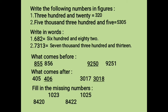Fill in the missing numbers. What comes before 1023? 1022. And what comes after 1023? 1024. And 1025 is already given to us. What comes after 10024? And what comes after 824? 8422.